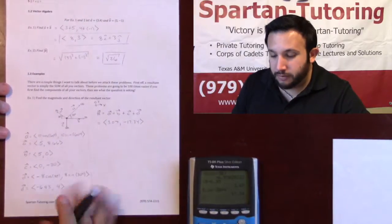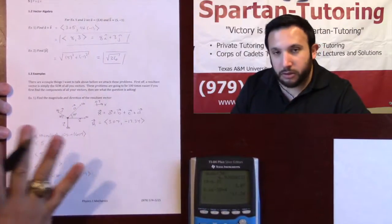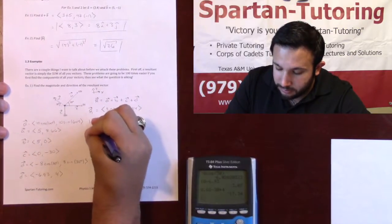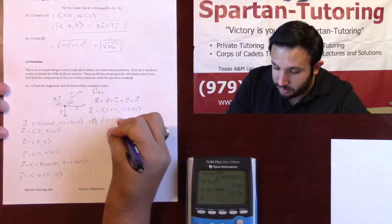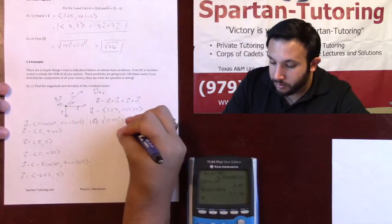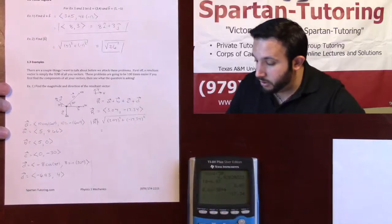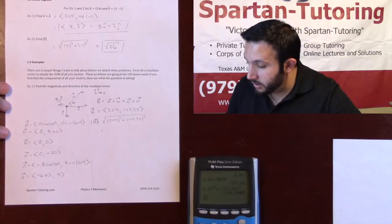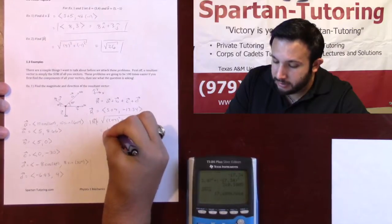So this is your resultant vector. What it wanted was the magnitude as well as the direction. Let's do the magnitude first — it's a little easier. The magnitude of the resultant vector is equal to the square root of your x term squared plus your y component squared. So it's the square root of 3.07 squared plus negative 17.34 squared. Putting that into the calculator and taking the square root, we get 17.61. So the magnitude is 17.61.